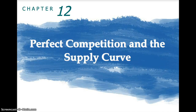Welcome to the Chapter 12 lecture on Perfect Competition and the Supply Curve. The next four chapters cover the four types of market structures firms can operate in: perfect competition, monopoly, monopolistic competition, and oligopoly. Competitive markets and monopolies are the extremes, while monopolistically competitive and oligopoly markets are more common.